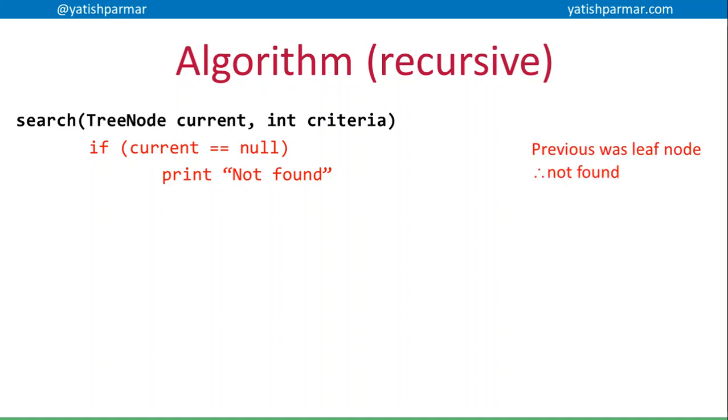Now, if my current node is null, then basically I've hit the end of my tree - I've just fallen off the bottom level of the hierarchy because the previous node was a leaf node, and therefore that data that I'm looking for doesn't exist in my tree.